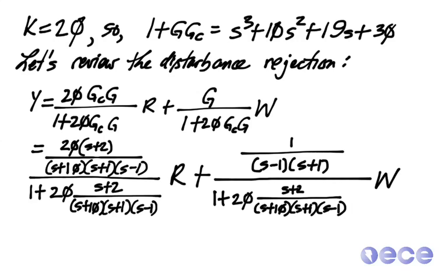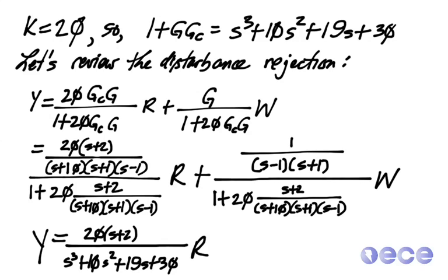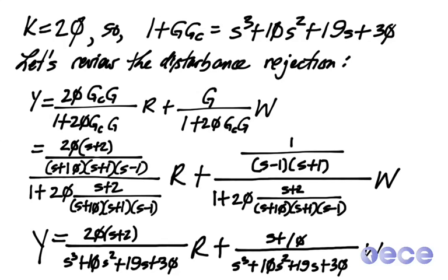Okay, so now we have some simplifying to do. After we do that, we see that we get y equals 20 times quantity s plus 2 over our characteristic equation times the reference input, plus s plus 10 over our characteristic equation times our disturbance.